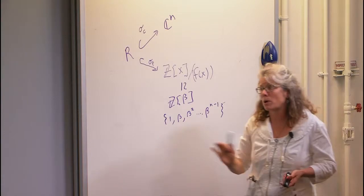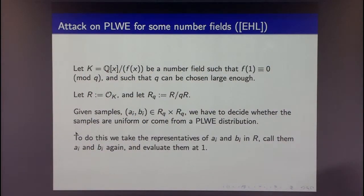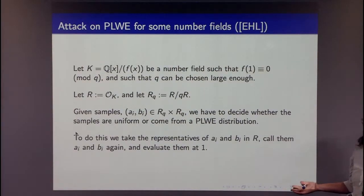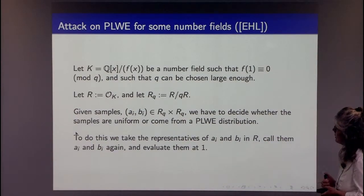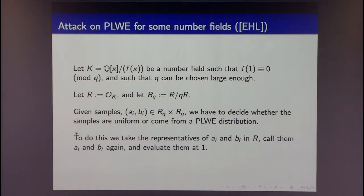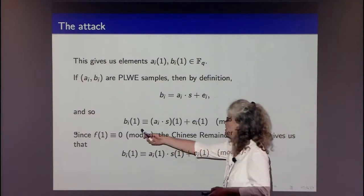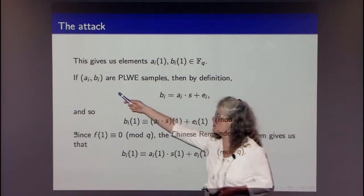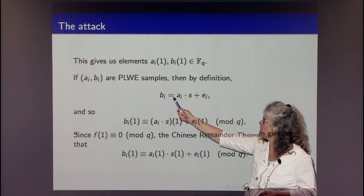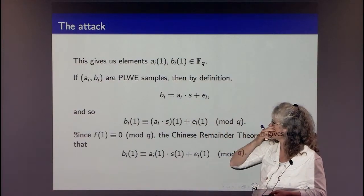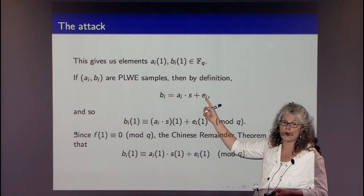So the question is: what happens if you don't stick to two-power cyclotomics? In general, for many rings, there are attacks on PLWE. Here's how the attack works. You take a PLWE sample (A_i, B_i), where B_i = A_i · S + E_i, and E_i has been selected with small coefficients in the power basis — it's a polynomial with small coefficients.